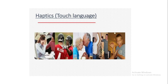Haptics is the touch language. John Keats, the famous romantic poet, once said that touch has a memory. We know the good touch and the bad touch. Sometimes touch is very positive and sometimes we feel offended by touch as well. Touch is also a language — the study of touch language is known as haptics.